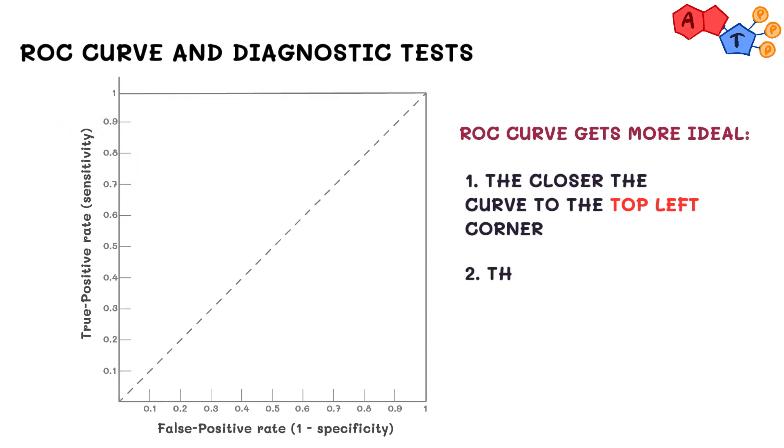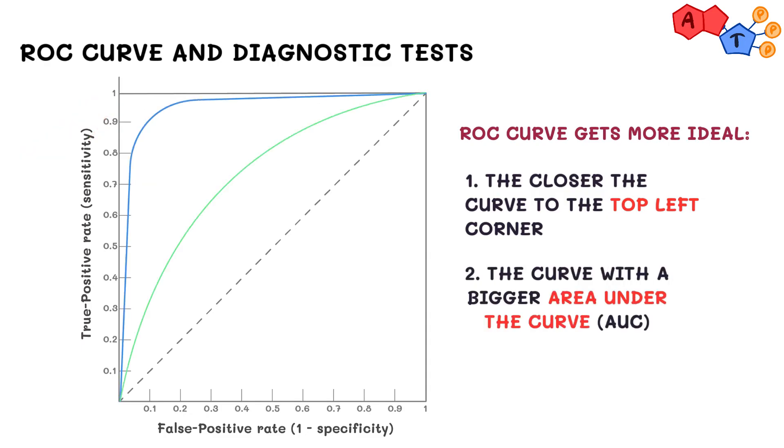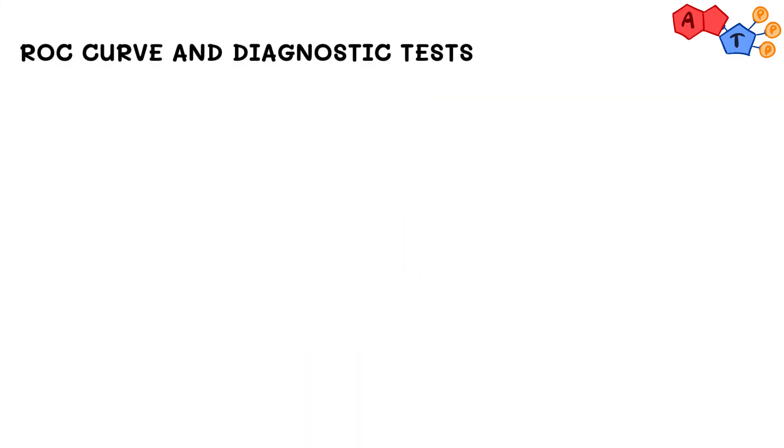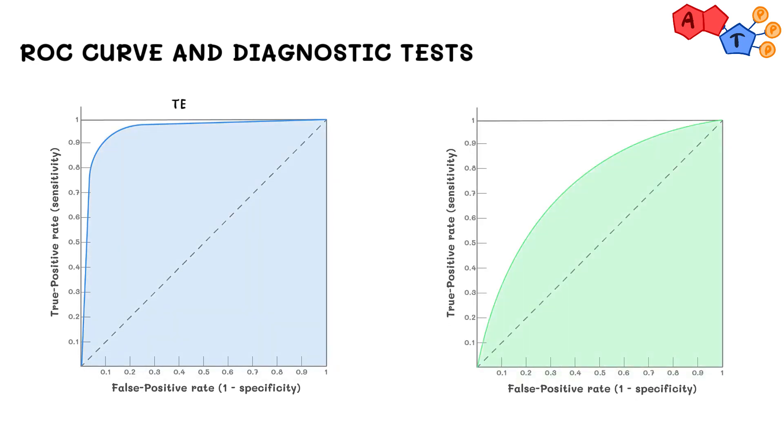Another way you could go around this is to check which curve has more area under it. Every curve will start at the bottom left corner and end at the top right corner, so how much it approaches the top left corner will also determine how much area it covers under it. So for example, when looking at these two curves, it's clear that curve A is the better performing test since it covers a lot more area under it than curve B.